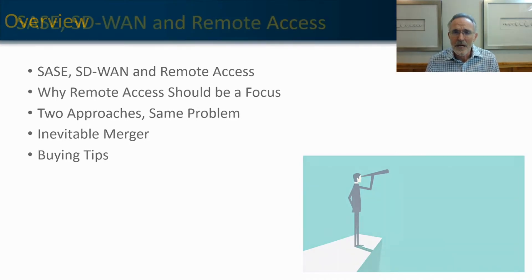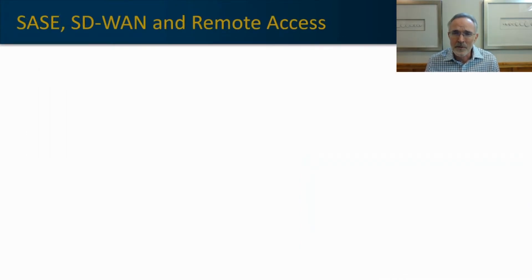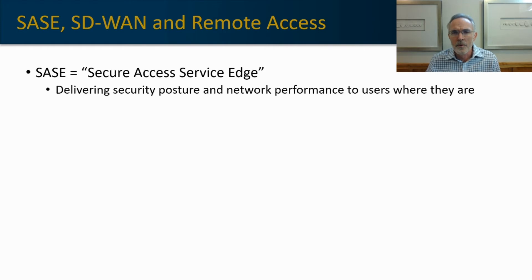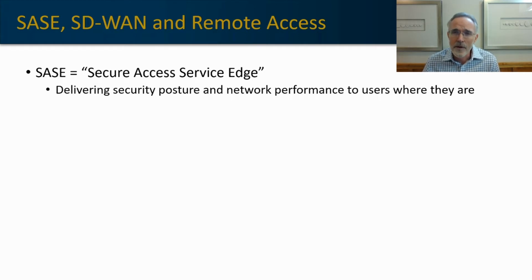Let's quickly define some terms. I have videos on these and will put links in the description so you can get more information. SASE — secure access service edge — is essentially delivering a security posture and network performance to your end users, no matter where they are and no matter what device they're using. It's a way of bringing control, governance, and performance to your end users no matter where they are in the world.